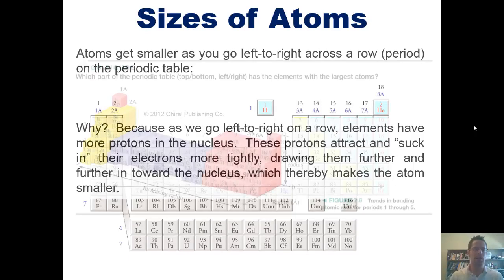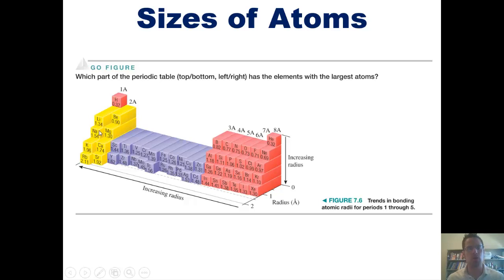We can see that exhibited in this table, which shows the individual atomic radii of most of the elements on the periodic table. You can see with some exceptions here and there, there's a general trend as I go left across a row, the elements get smaller and smaller. And once again, the reason is because I get more and more protons in the nucleus, which suck those electrons in tighter and tighter, making the elements smaller.